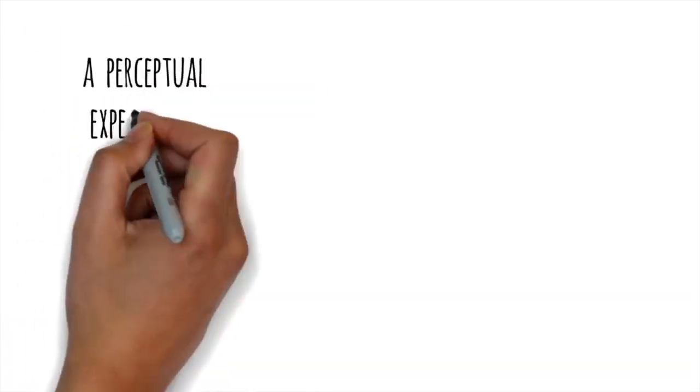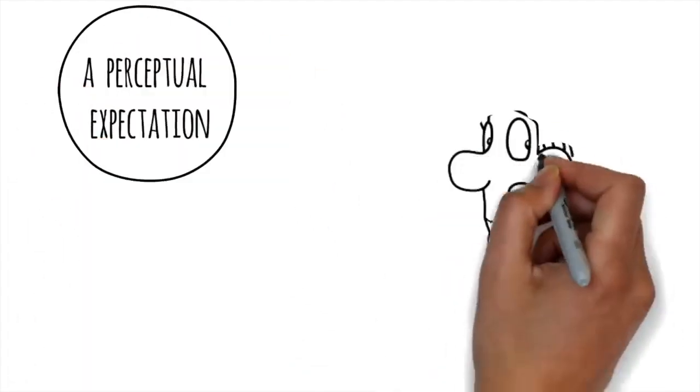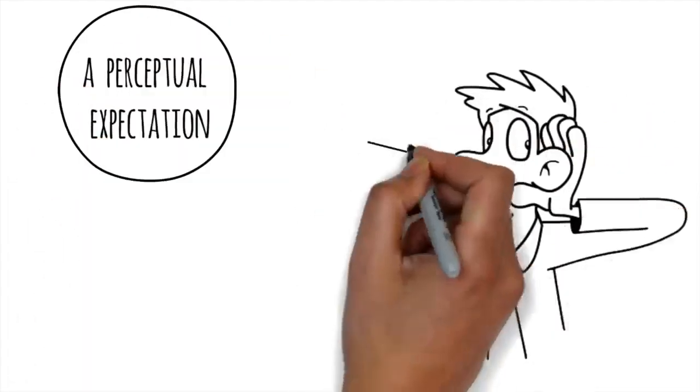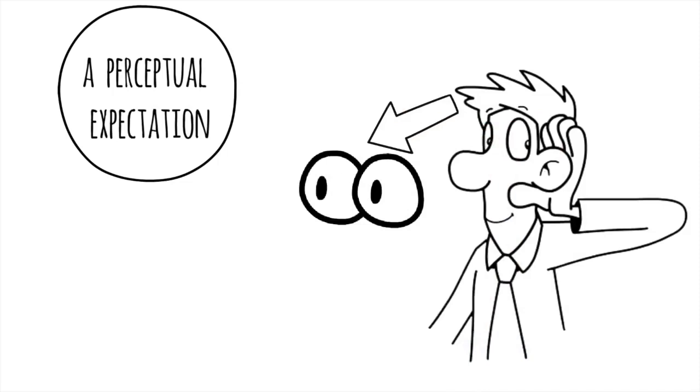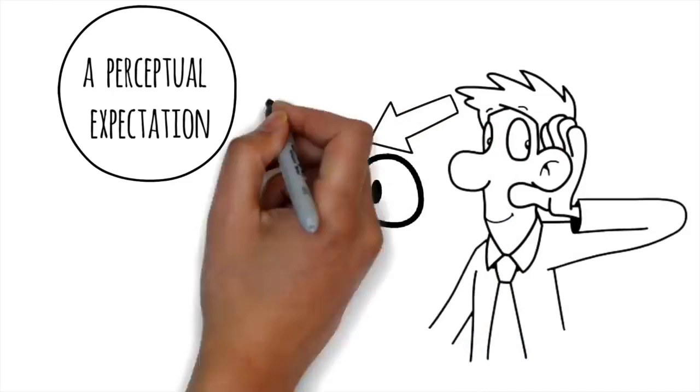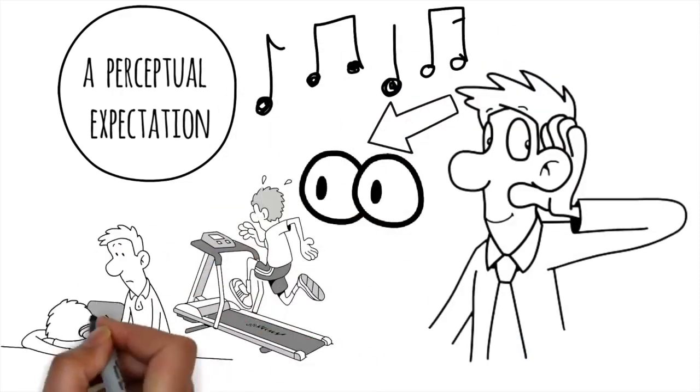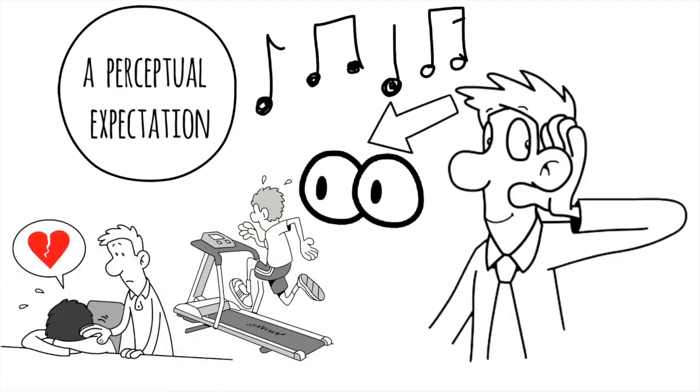The music was making them see things that weren't there. It created something called a perceptual expectation. When you hear one thing through your ears, your brain will expect to see something similar through your eyes. This is why music can improve a workout or help after a breakup. It sets the tone by creating that perceptual expectation.